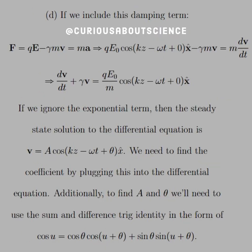For part D, if we include the damping term, the force equation becomes F = qE − γmV = ma. This is all just a differential equation. We get all the V terms to one side and divide by m to isolate dV/dt.